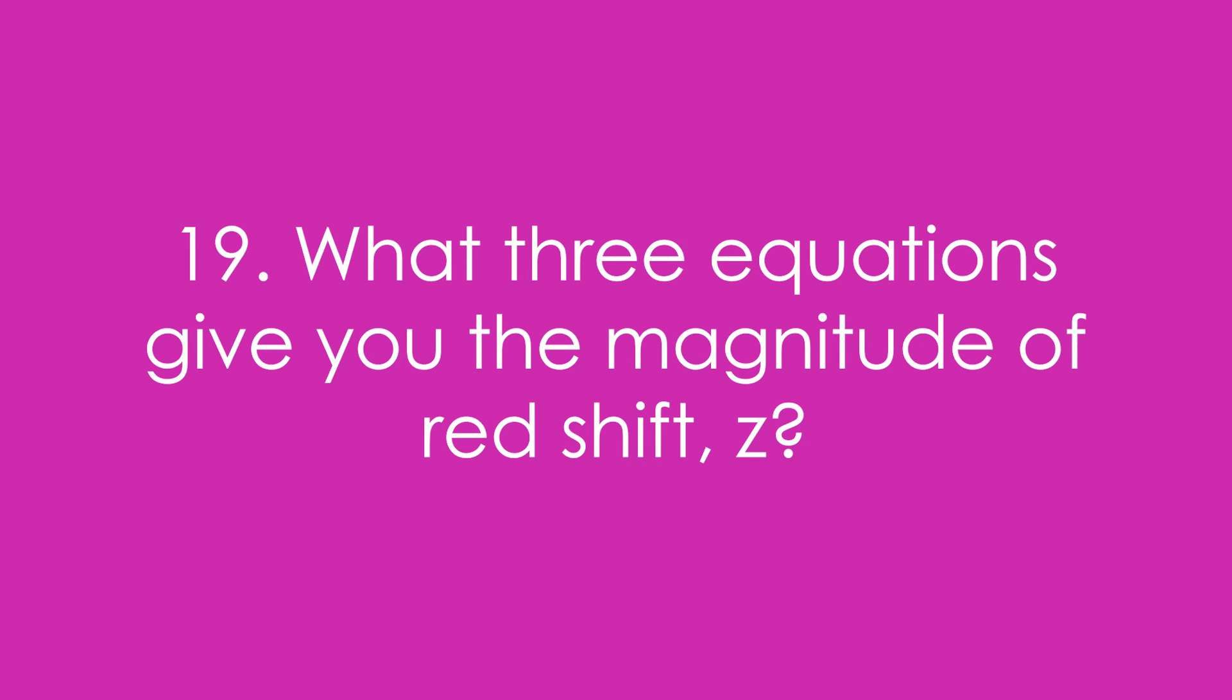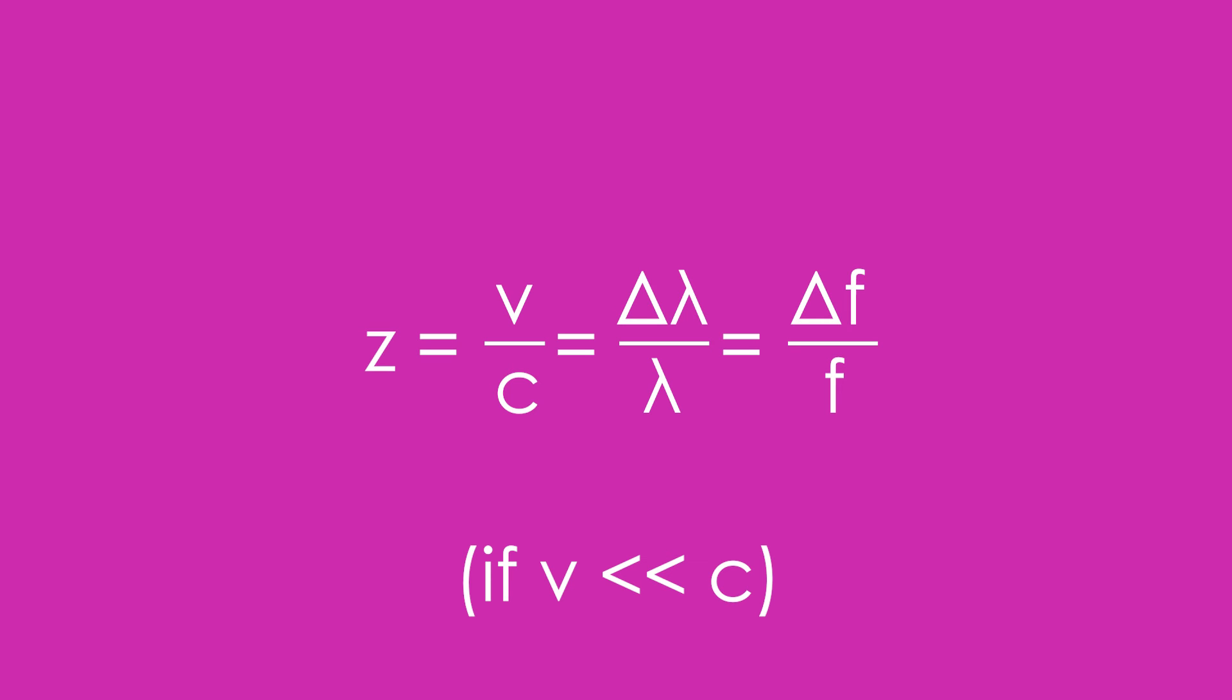Question 19: What three equations give you the magnitude of red shift Z? It's equal to V over C. Don't forget that this is only true if V is a lot less than C. It's also equal to the ratio of how wavelength or frequency have changed compared to what they should be.